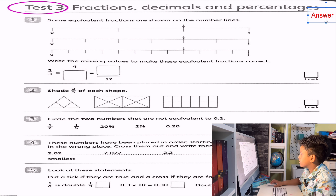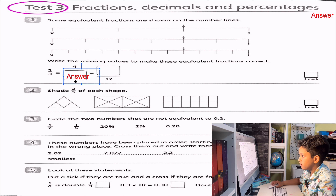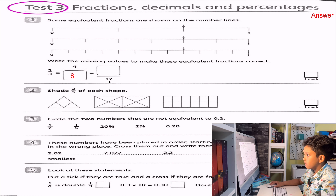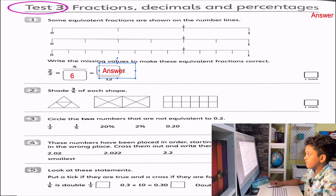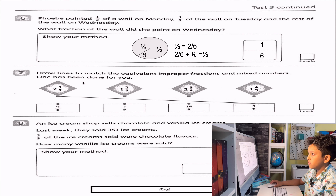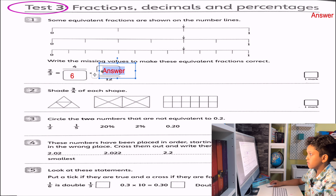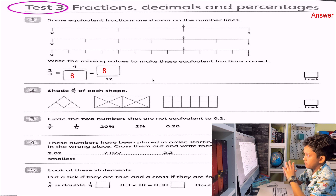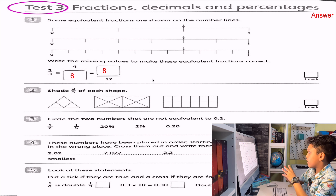So let's write the answer. The answer is 6. Now we need to know what 4 sixths is equivalent to in twelfths. That's 8 twelfths, because 6 times 2 is 12, and we've got the same denominator, so 4 times 2 is 8. So we've done the first question.